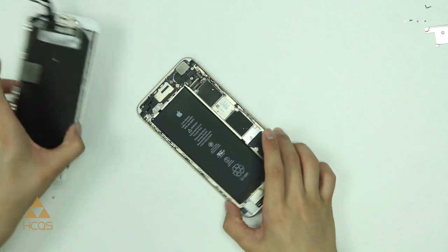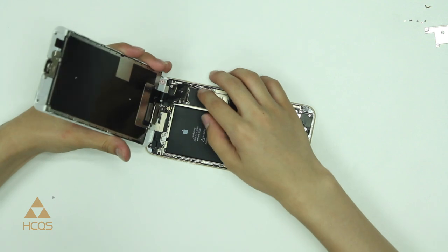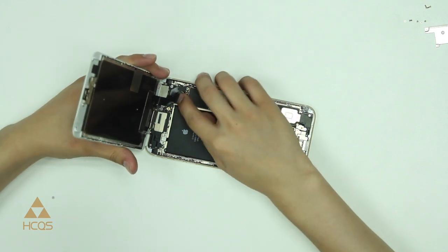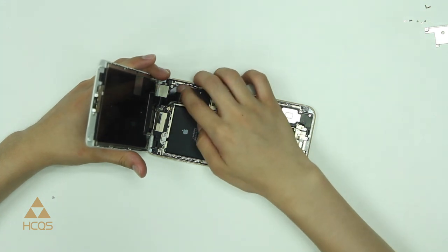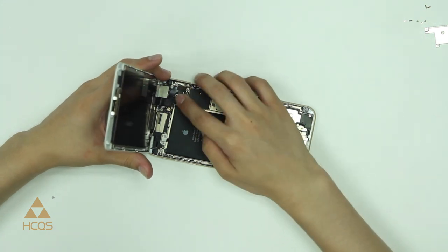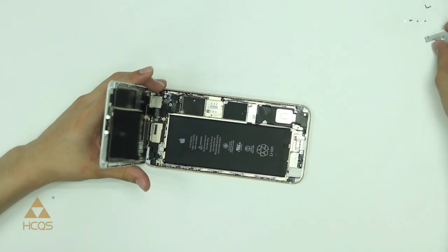Now from here, it's always a good idea to plug in your screen and make sure that it is functioning properly because once you set the screen down on the adhesive, you will not be able to remove it without replacing the adhesive again. So I recommend you plug this in, power up the phone, and make sure that everything's working properly once you have this panel reinstalled.